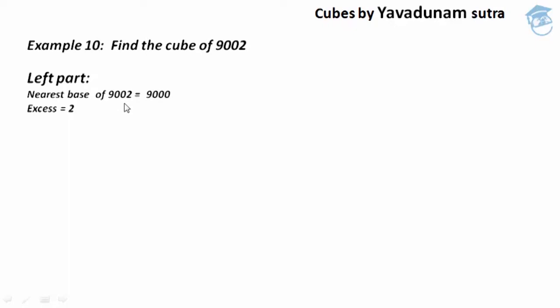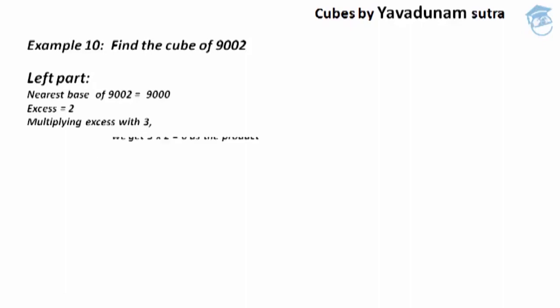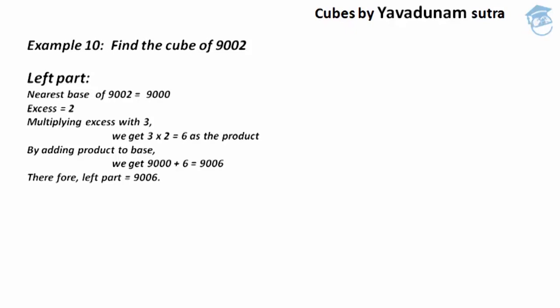If we compare these two numbers, we get an excess of 2. Moving to step number 3, we have to multiply the excess with 3. So by multiplying 3 into 2, we get 6 as the product. Moving to step number 4, we have to add the product to the base. By adding 9000 with 6, we get 9006 as the sum, and this 9006 is regarded as the required left part.